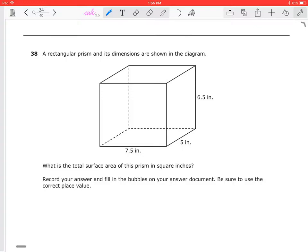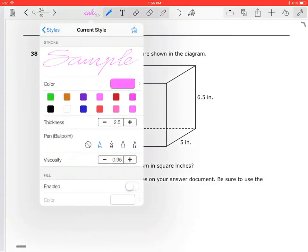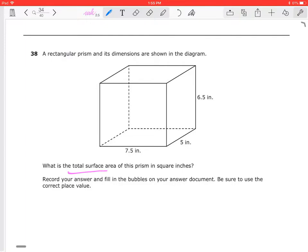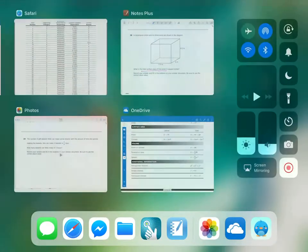All right, welcome back. Number 38, a rectangular prism and its dimensions are shown below. And the total surface area of this prism, what is the total surface area? So total surface area of this prism.